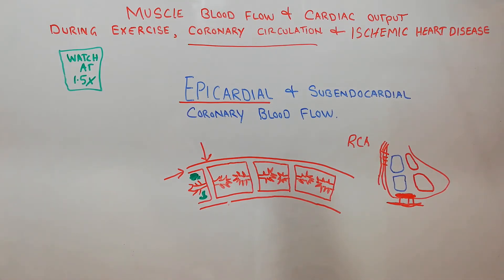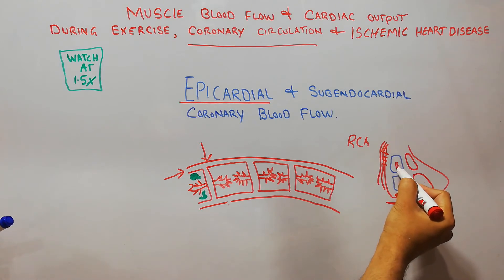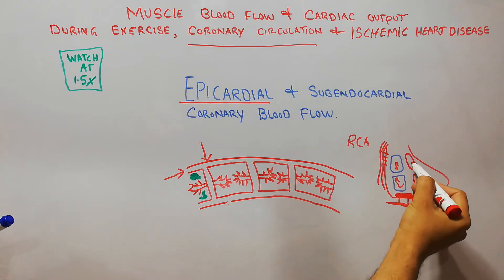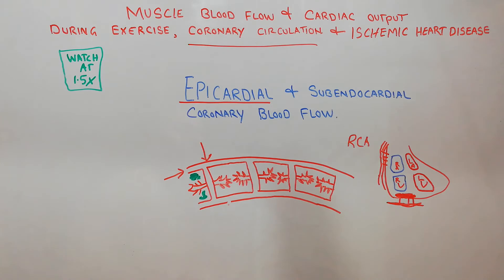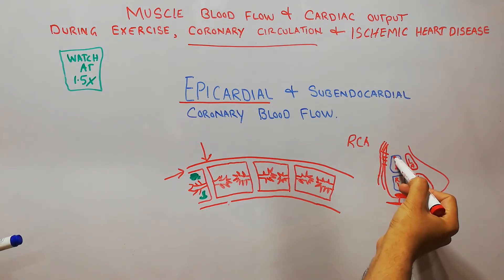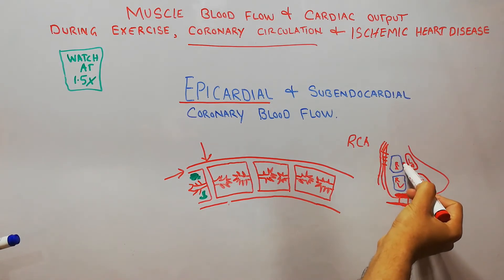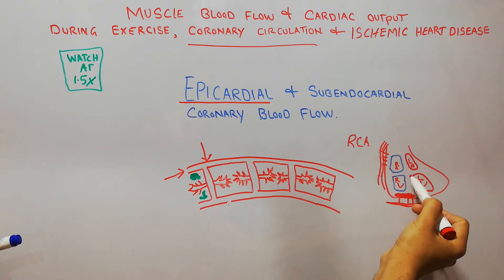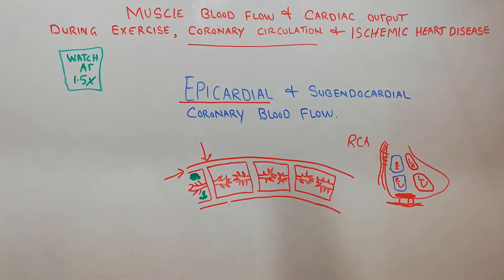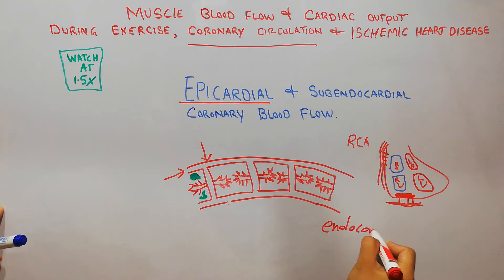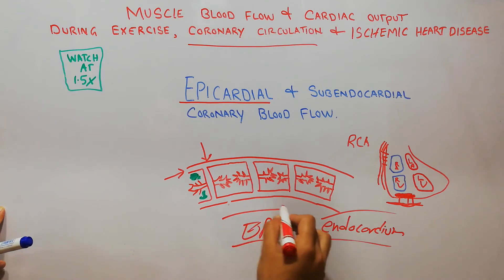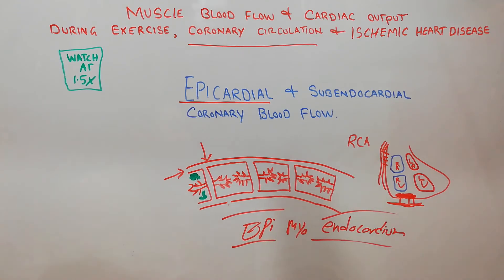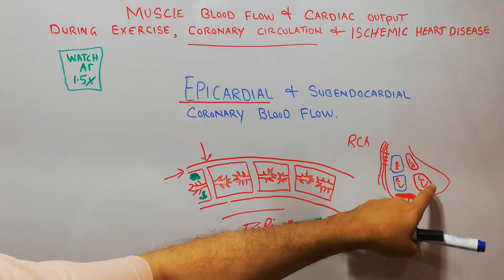The heart cavities include the right atrium, right ventricle, left atrium, and left ventricle. The inner surface of the heart is the endocardium, the outer layer is the epicardium, and the middle portion is the myocardium — so the three layers are epicardium, myocardium, and endocardium.